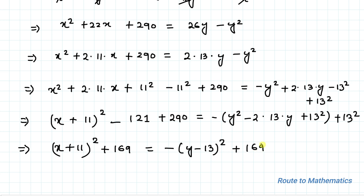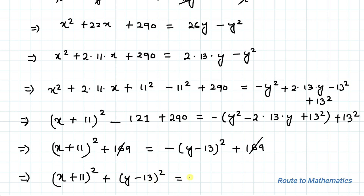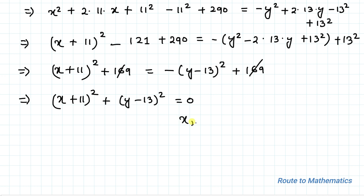The +169 on both sides cancels out. This implies (x + 11)² + (y - 13)² = 0. Since x and y are real numbers, the only way a sum of squares equals zero is if each term is zero.